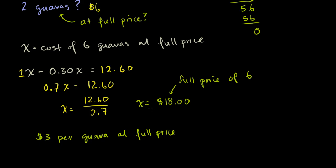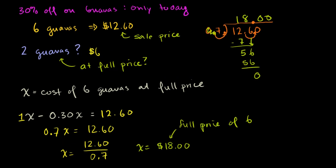Another way you could have done it, six at full price are going to cost me $18. Two is one third of six. So one third of $18 is $6. So just to give a quick review of what we did, we said the sale price on six guavas, $12.60, that's 30% off the full price. Or you could say this is 70% of the full price. So if you say x is the full price of six guavas, you could say the full price of six guavas minus 30% of the full price of six guavas is equal to $12.60. And that's equivalent to saying 70% of the full price is $12.60. We just solved this algebraically. Divide both sides by 0.7. And then we got x, the full price of six guavas, is $18. Or that's $3 per guava, or $6 for two. Anyway, hopefully you found that helpful.